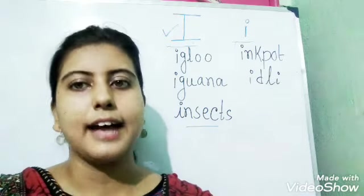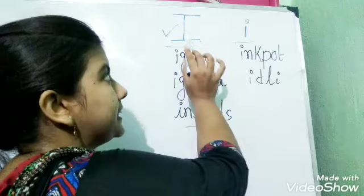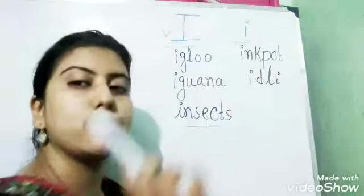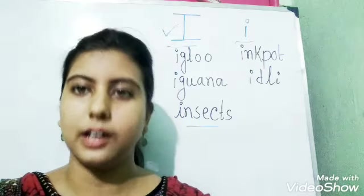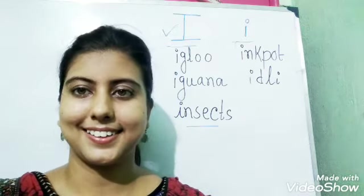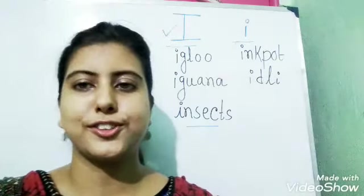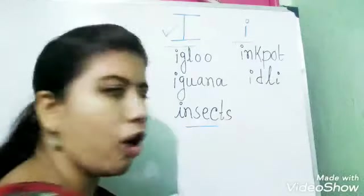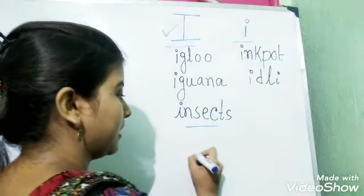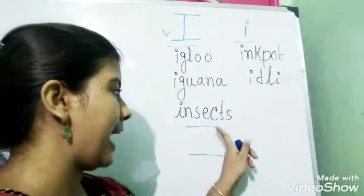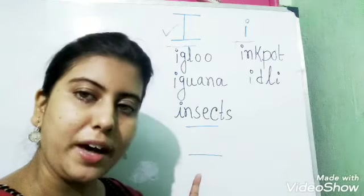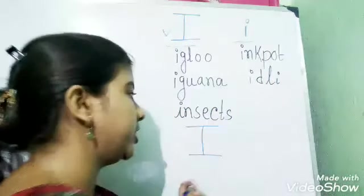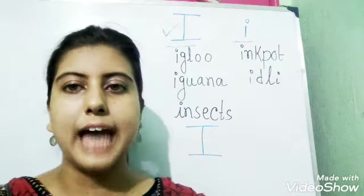Today's second alphabet is this one. This is I. This is capital I and this is small i. First we will learn how to write I. To write I, I will use three straight lines. We have to draw a horizontal line and then another horizontal line at some distance, and then we will join these two lines with a straight line. That will make capital I.